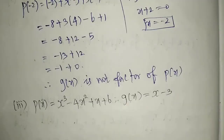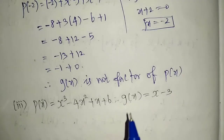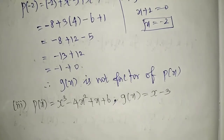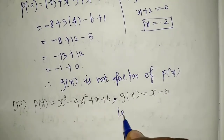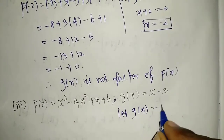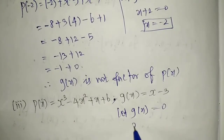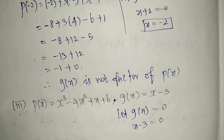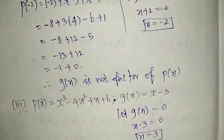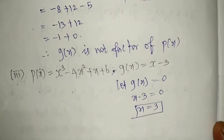For case 3: p of x equals x cubed minus 4x squared plus x plus 6, and g of x equals x minus 3. Again, take g of x equal to 0. So x minus 3 equals 0, giving x equals 3. We substitute this x value into the given polynomial.